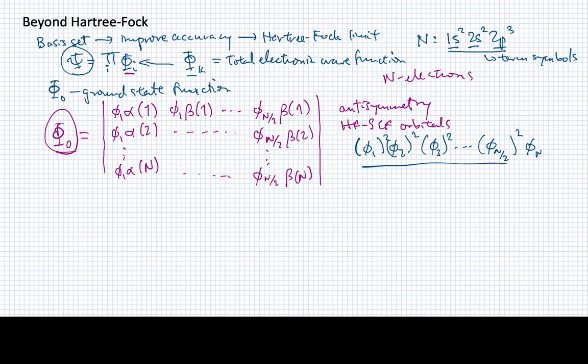But what if I have another orbital up here that has no electrons in it? So it's phi n over two plus one. But now I want to say, I'm going to move one of the electrons from here into there, or one of the electrons from here into there. I can think of all the possible combinations of doing that. And those would represent all of the single excitation configurations that I could manufacture from this.